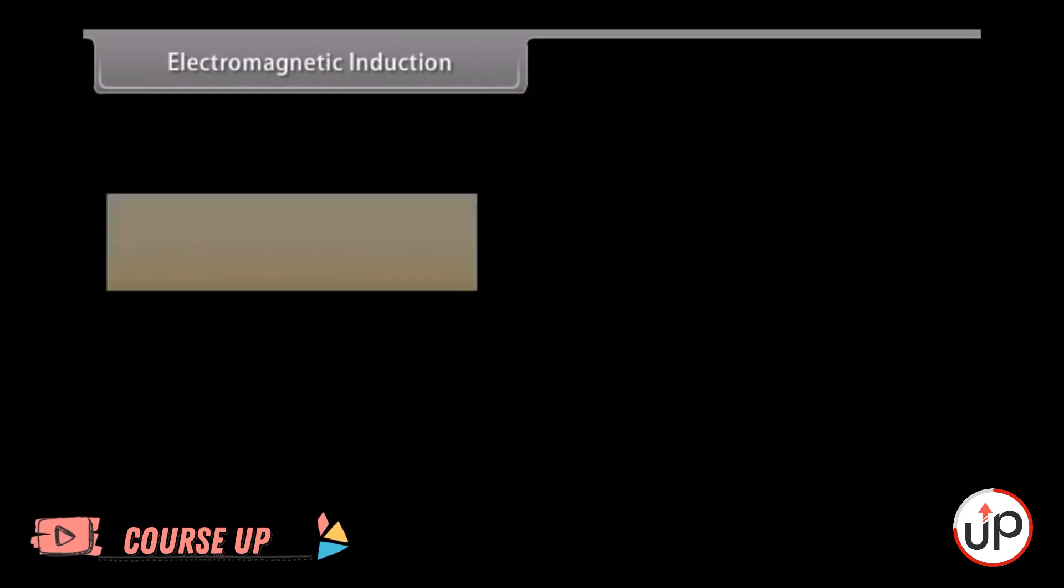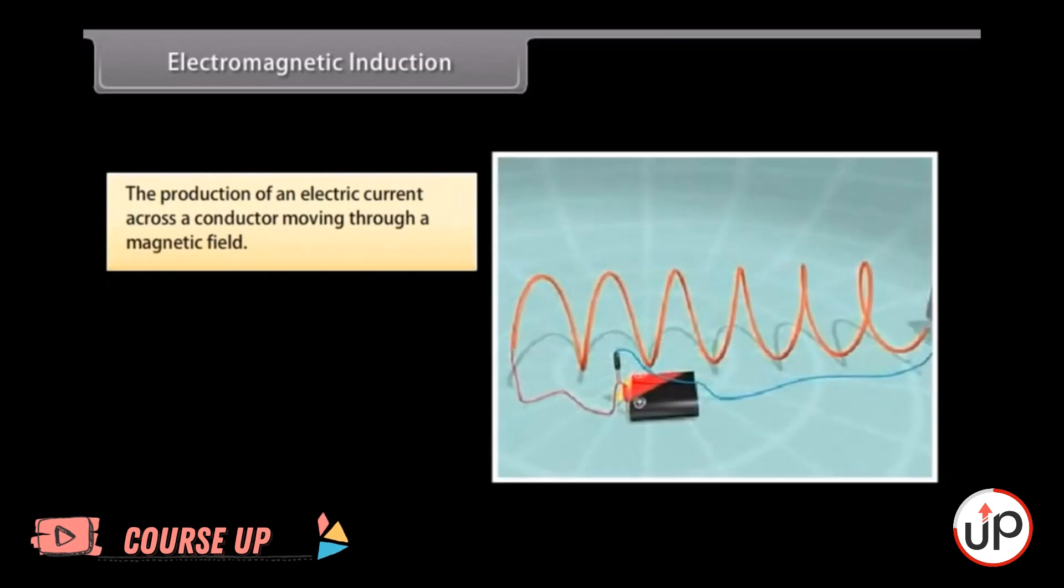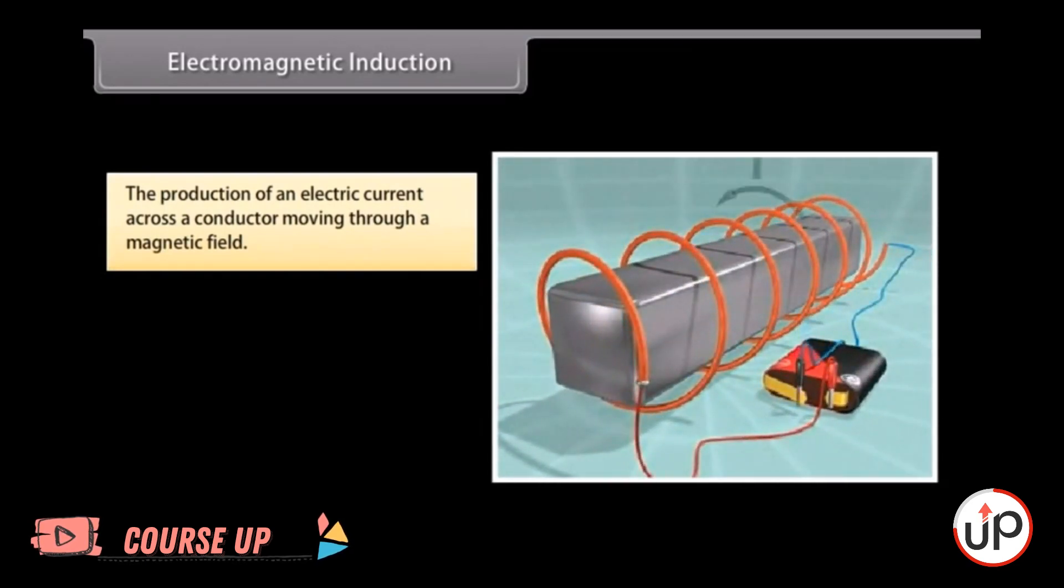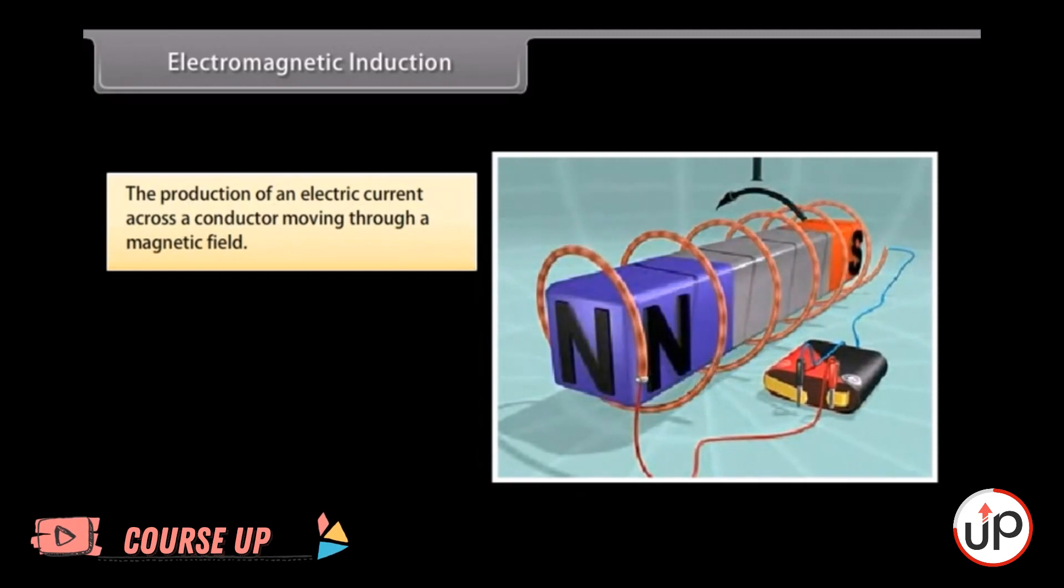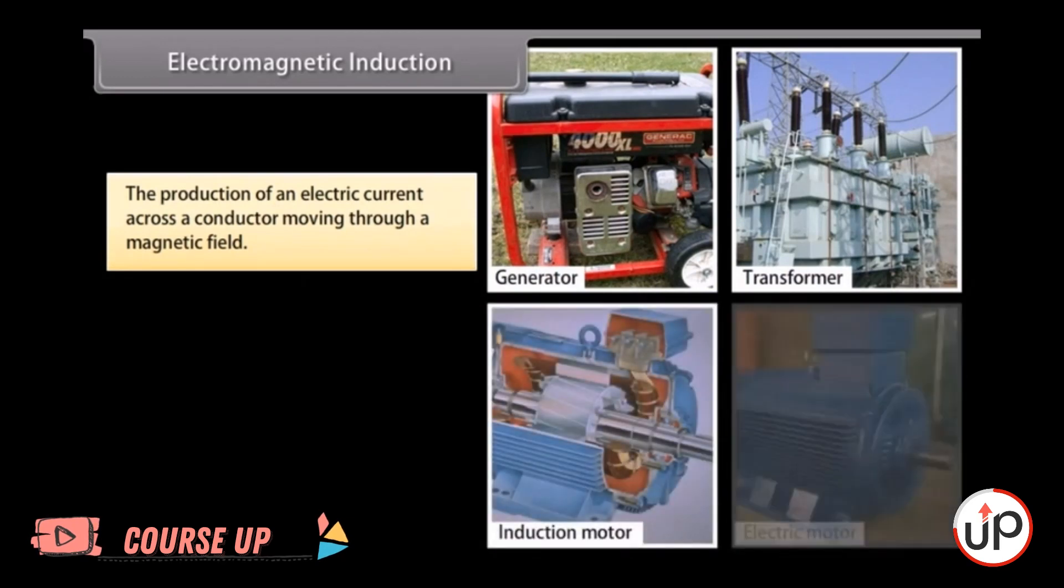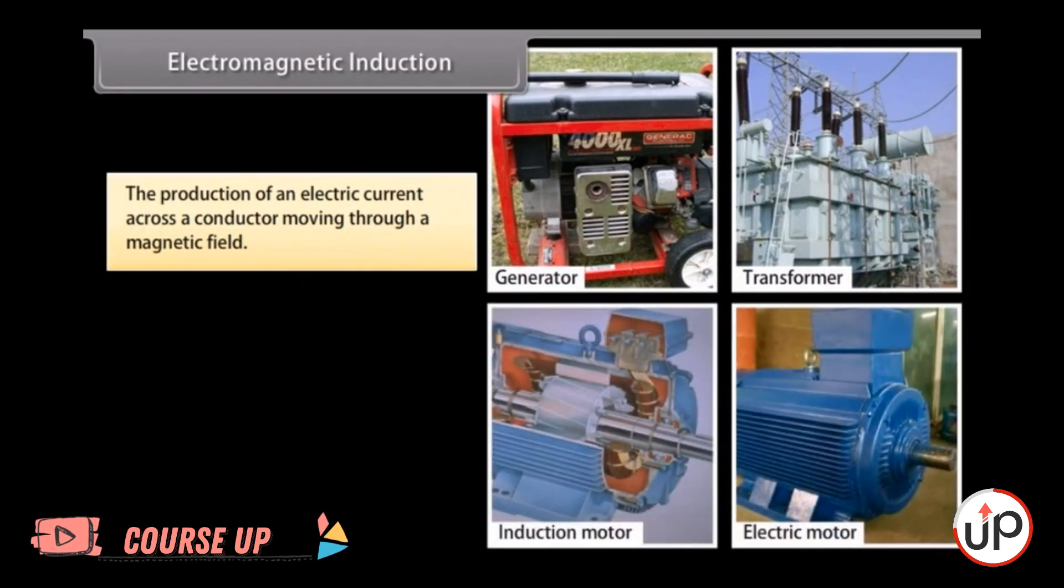Electromagnetic induction. The production of an electric current across a conductor moving through a magnetic field is called electromagnetic induction. For example, generators, transformers, induction motors, electrical motors, synchronous motors, and solenoids all use electromagnetic induction.